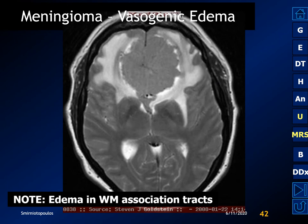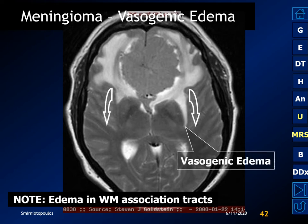Here's an example of a bifrontal meningioma extending on either side of the falx cerebri, and we can see how the vasogenic edema is extending along the association fiber tracts and along the external capsule. Notice that the gray matter is still intact with its normal signal intensity.